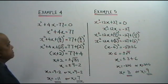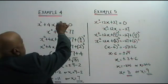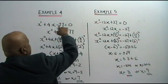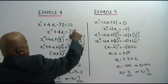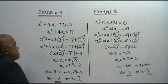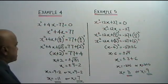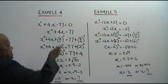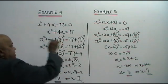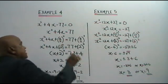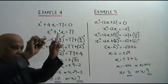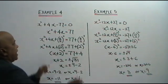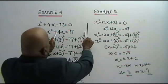Step number 1, move the negative 77 to the right — bring it here, you get positive 77. Now you take this number 4, divide by 2, and you square it, and add to both sides.